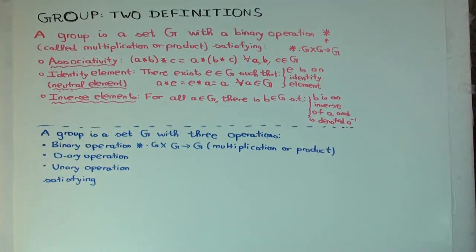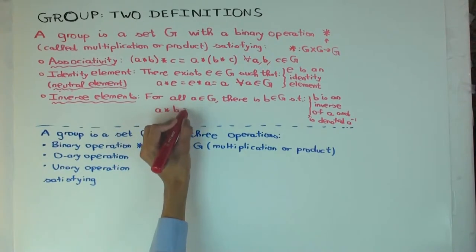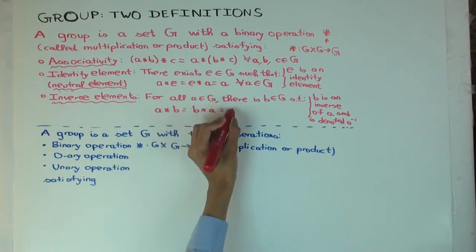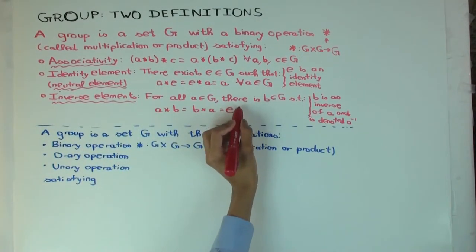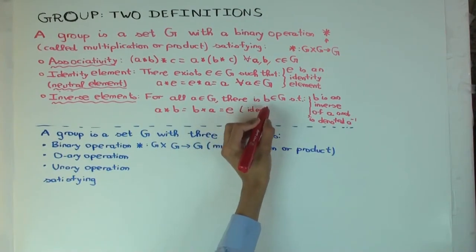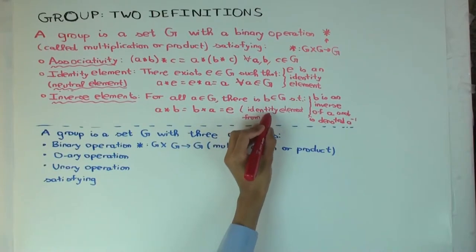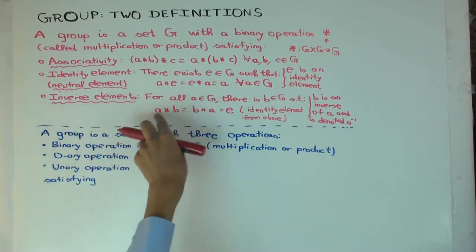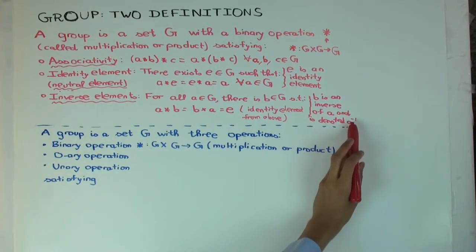The inverse element condition says: for every a, there is an element b — which we think of as the inverse of a — such that a star b equals e and b star a equals e. This depends on the identity element: you first find an identity element, and then the inverse axiom is relative to that identity. b is sometimes denoted a to the minus one, and it's read as 'a inverse'.